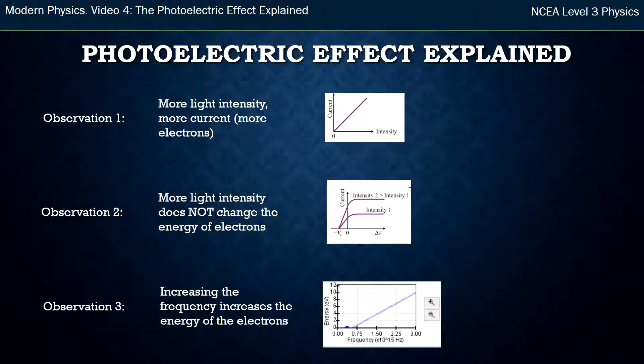The first observation was when we had more light intensity, so a brighter light, we found that more electrons came off the metal. Now that was explainable because if we think about light as a wave, having bigger waves hit the metal kind of made sense to us that more electrons would be knocked off.